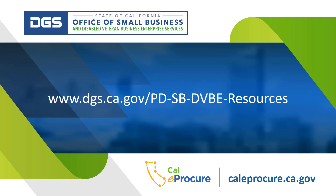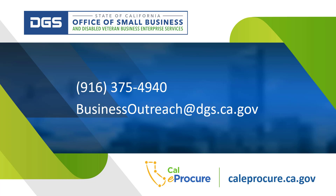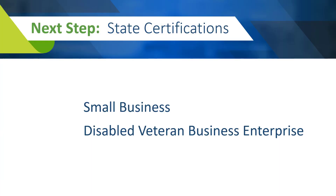For more information about how to register your business, go to www.dgs.ca.gov/PD-SB-DVBE-resources. The link is in the description below. For help with registering your business, call 916-375-4940 or email businessoutreach@dgs.ca.gov. If you are interested in becoming a certified small business or disabled veteran business enterprise with the State of California, click the link in the description of this video.